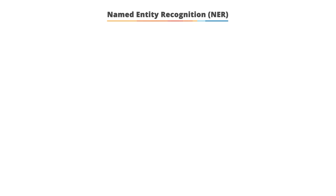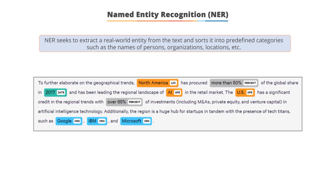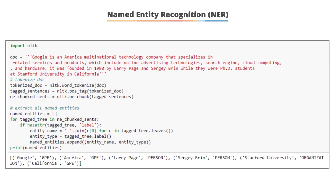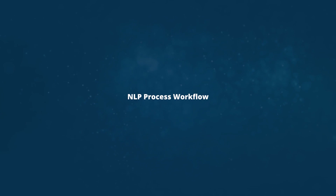Named Entity Recognition (NER) seeks to extract real-world entities from text and sort them into predefined categories such as names of people, organizations, and locations. Many real-world questions can be answered with NER, such as whether a tweet contains the name of a person or their address. For example, 'Google', 'America', and 'Larry Page' are named entities tagged as organization, GPE (geopolitical entity), or person.